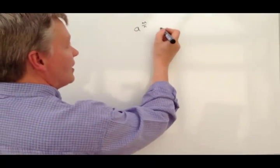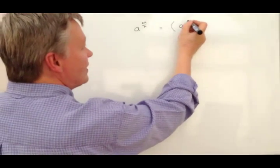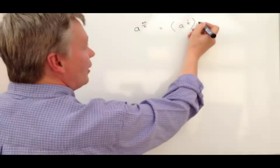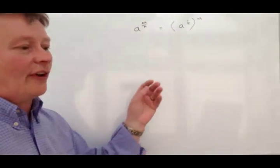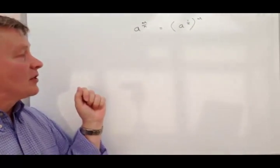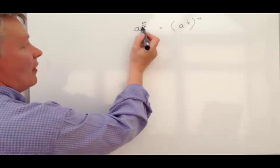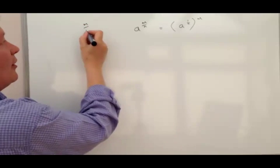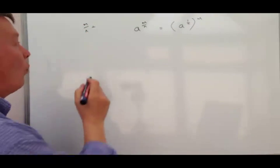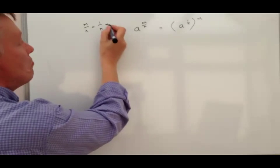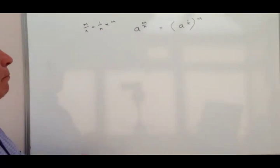So what you've got is the equivalent to saying a to the power of minus 1 over n to the power of m. So what I've done is I've said this m over n is the same as saying 1 over n multiplied by m.